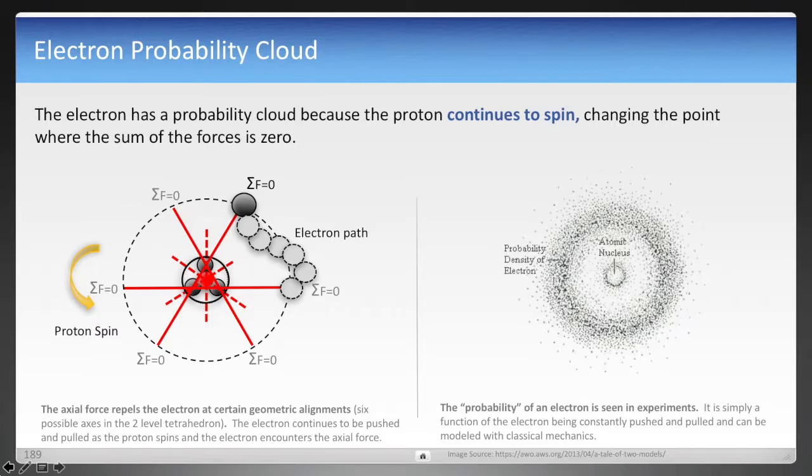And that explains why the electron seems to be almost anywhere and has a probability. And that's because it is constantly being pulled into the proton, but at certain points it is being pushed away.